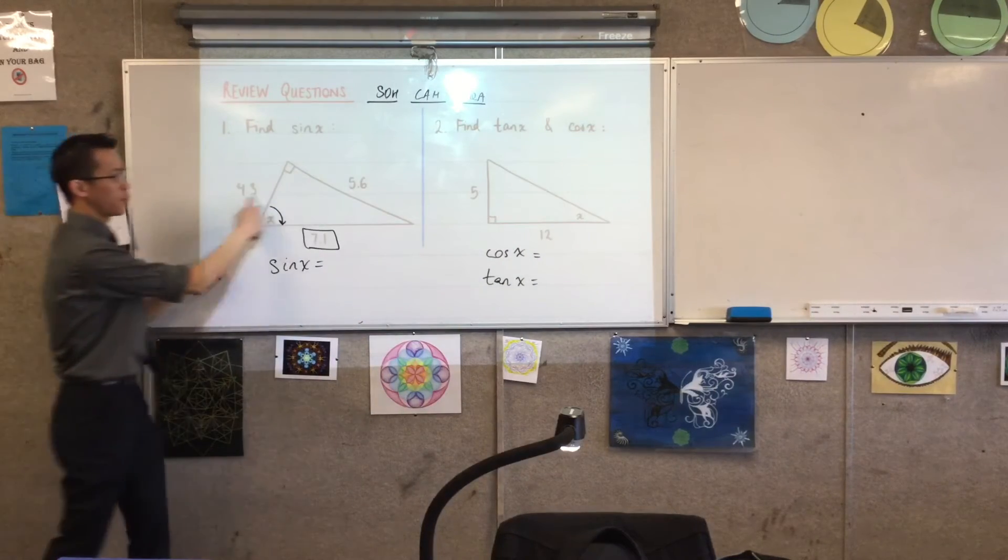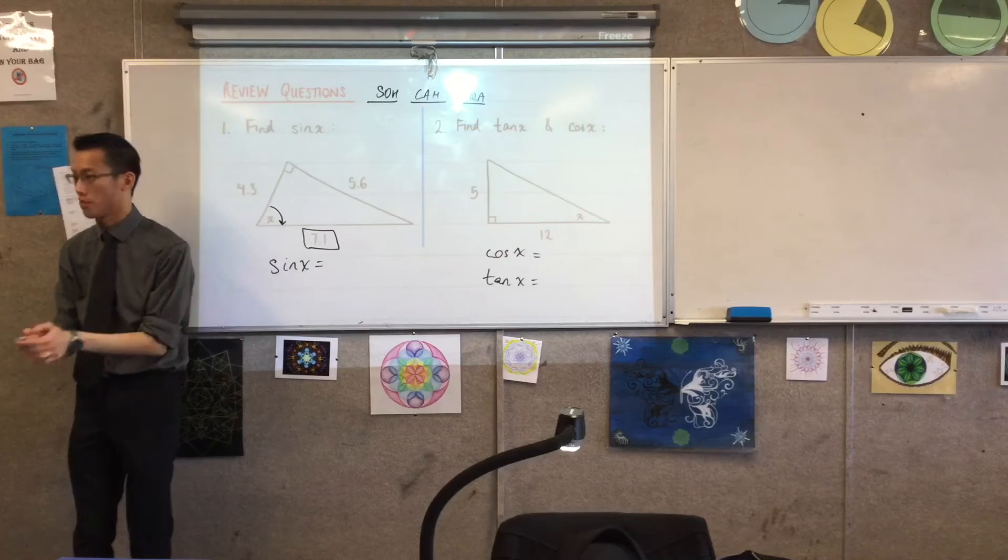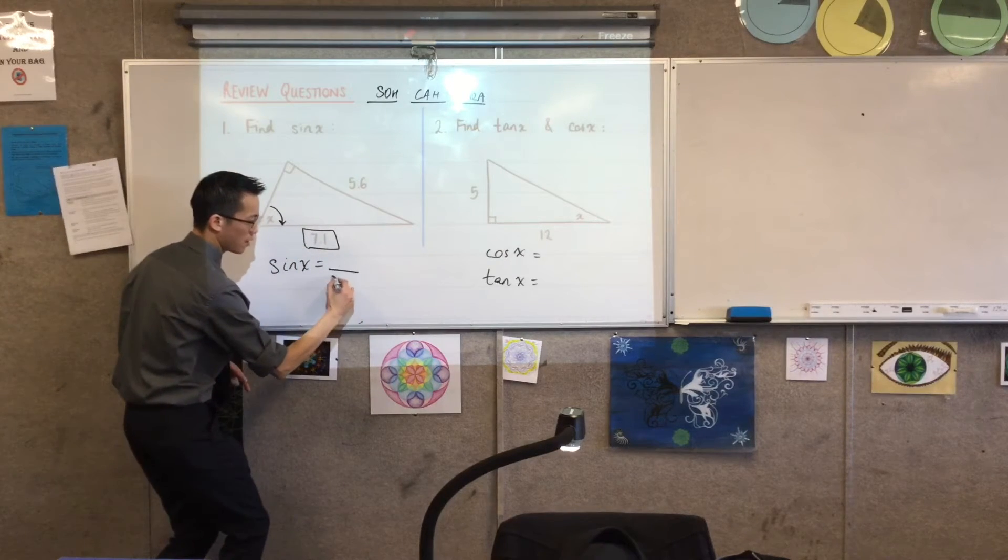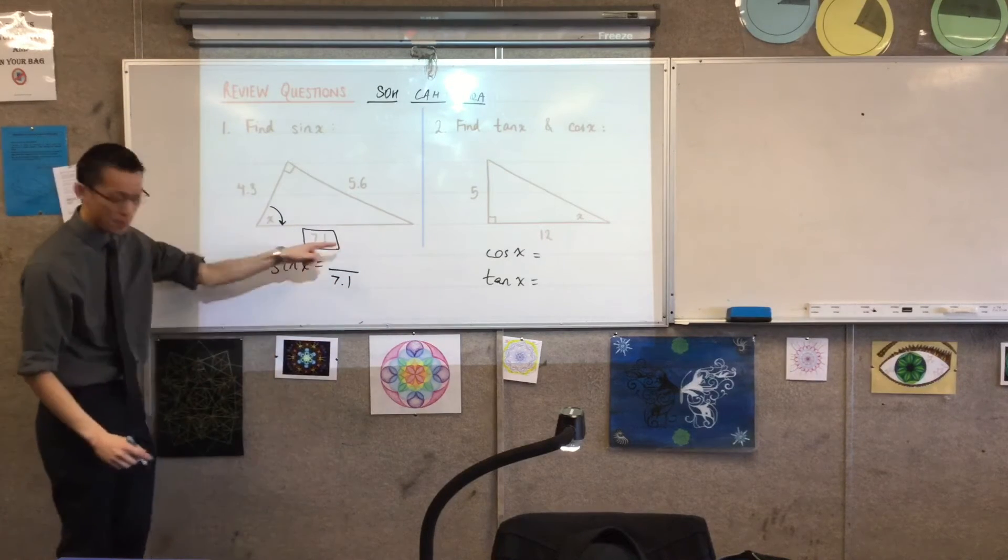You have all three here, so 4.3, 5.6, 7.1, easy to compare. So that's the hypotenuse, so it's going to be over 7.1. This is the opposite of the hypotenuse, I'm saying.